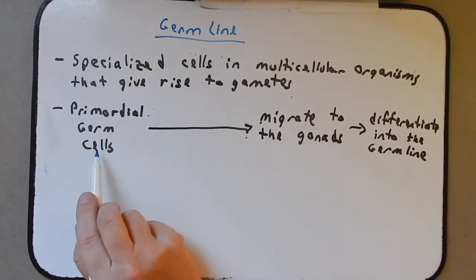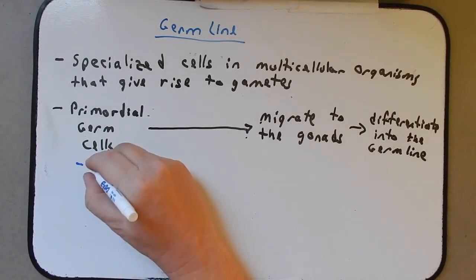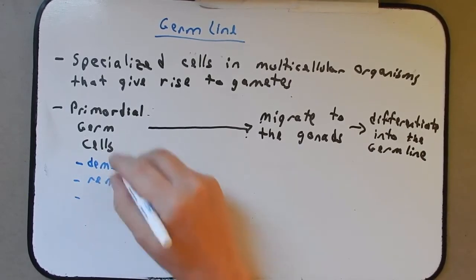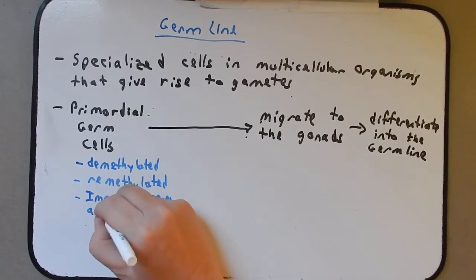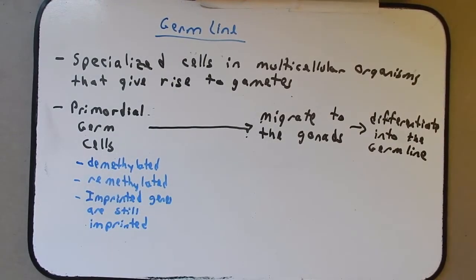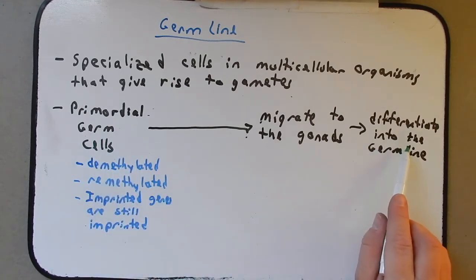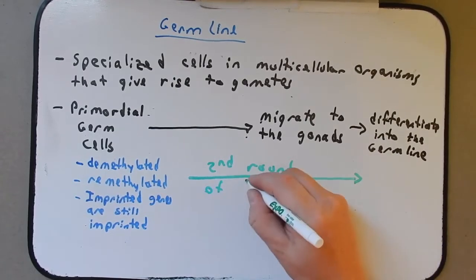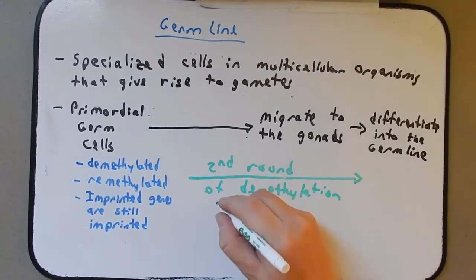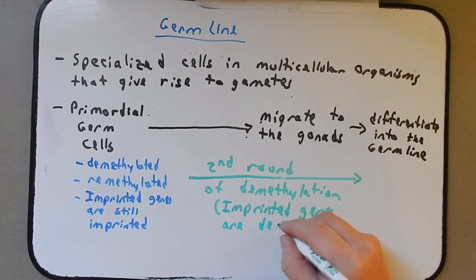These primordial germ cells will migrate to the gonads and differentiate into the germline. Now, with the exception of imprinted genes, the DNA in the primordial germ cells have been demethylated and then remethylated. And, remember, in these primordial germ cells, the imprinted genes are still imprinted. Now, what happens as we go from primordial germ cells to the fully differentiated germline is a second round of demethylation. And, in this case, the imprinted genes are demethylated as well.